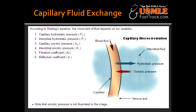What is the equation of net filtration pressure? The equation for net filtration pressure is: P net equals the capillary pressure minus the interstitial fluid pressure. Secondly, you take the plasma colloid osmotic pressure and subtract the interstitial fluid colloid osmotic pressure. You then subtract the second part from the first part to get P net.